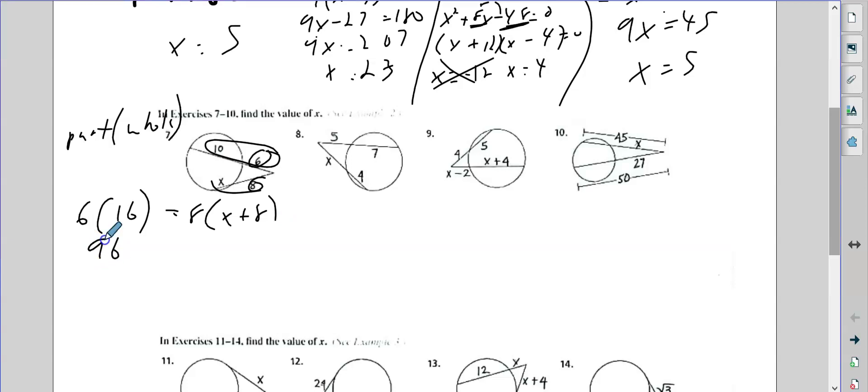So that gives me 96 equals 8x plus 64. When I subtract 64, I get 32. And when I divide by 8, x is 4.